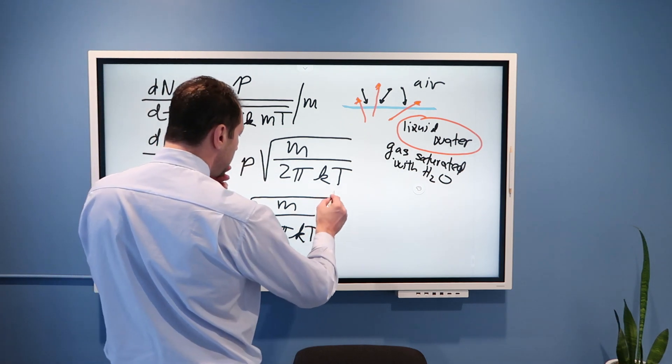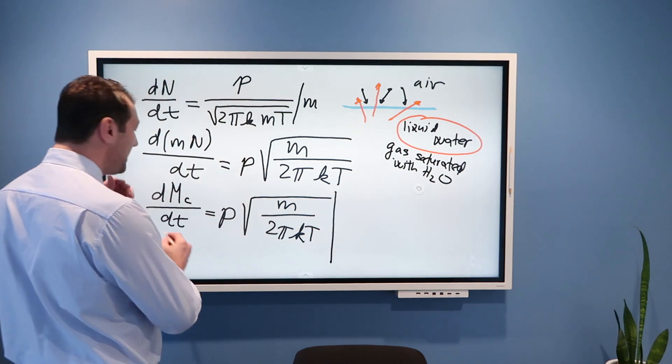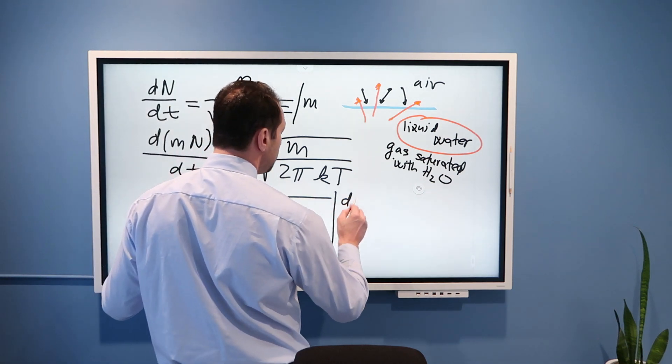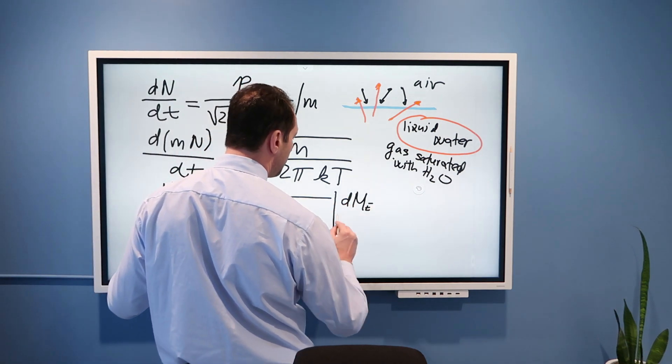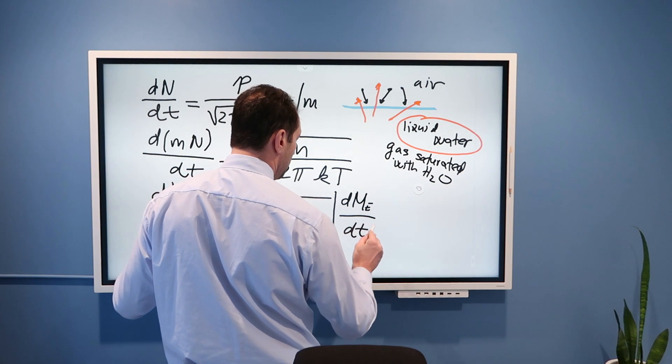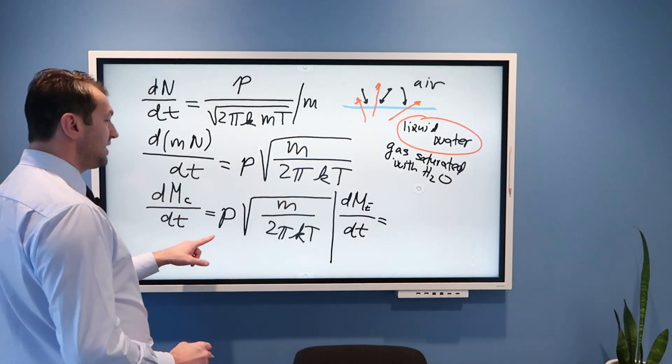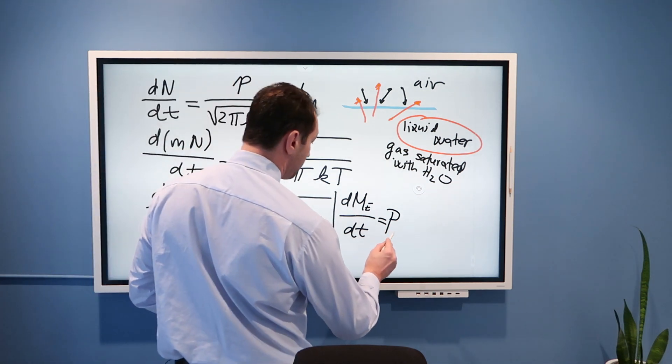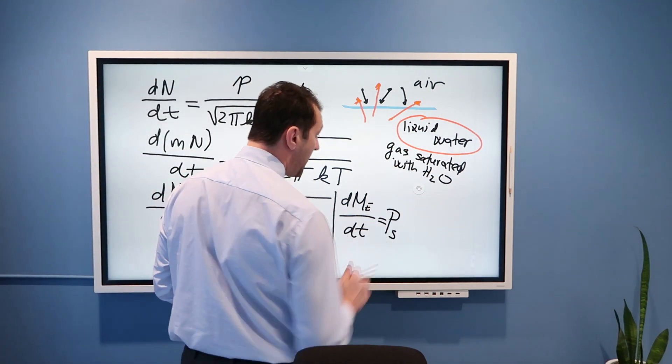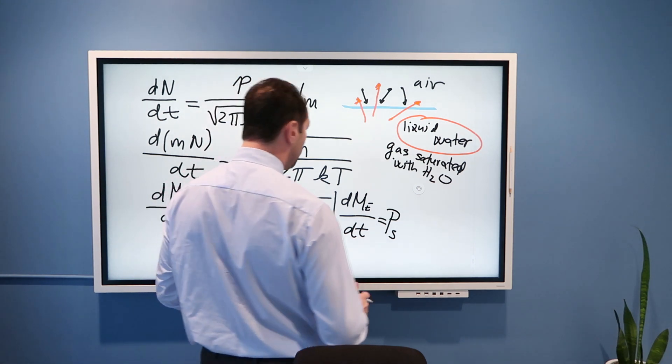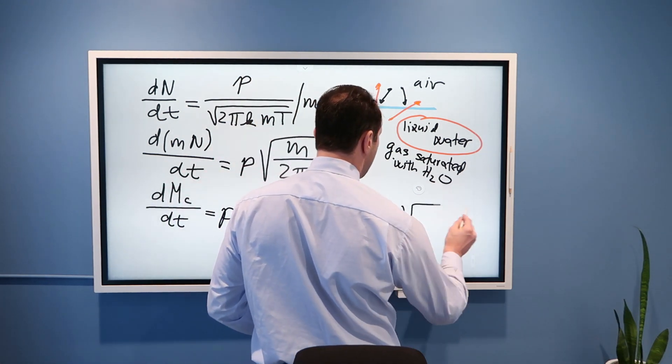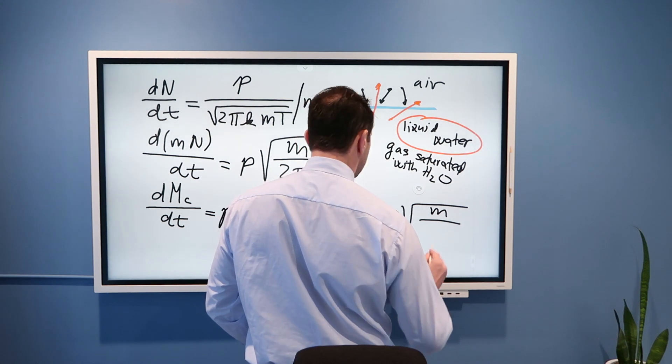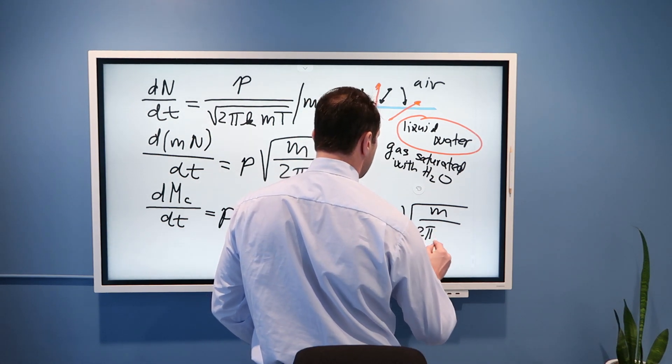Well, in that case, you can see that one can use this same formula to calculate dmE/dt, rate of evaporation in time, is equal p, but not p but ps. Ps because gas is saturated with water vapor and then times mass of water vapor molecules divided by 2πkT.